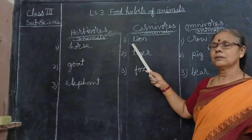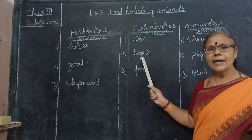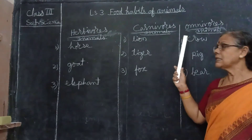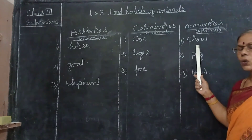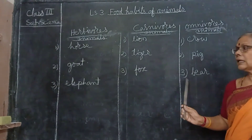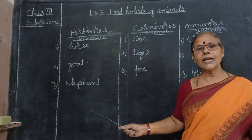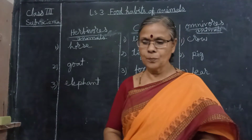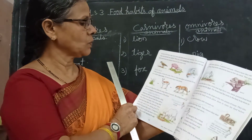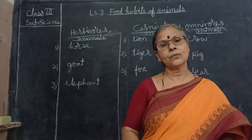Then omnivores animals: crow — C-R-O-W. Pig — P-I-G. Bear — B-E-A-R. These are the three categories of animals' names. You have to memorize them along with the spelling and also write in your notebook. You can see textbook page numbers 201 and 202 — all the three categories of animals are there.